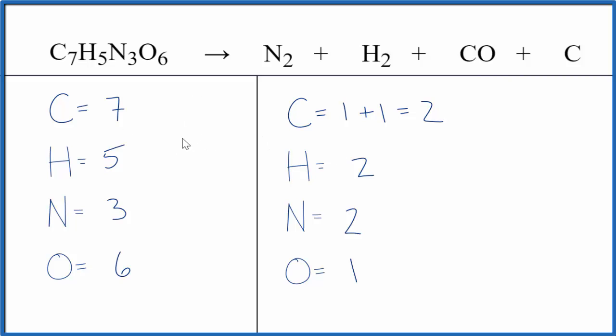So to balance the equation for the decomposition of TNT, I've already counted the atoms up. The thing to be careful of, I have a carbon here and here. So one plus one, that gives me two.